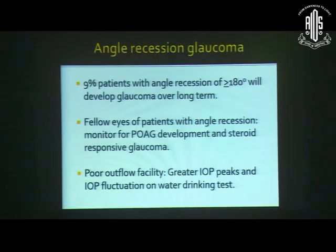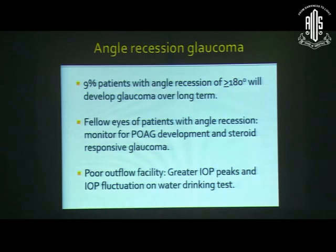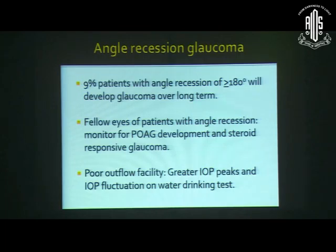9% of patients with angle recession of more than 180 degrees will eventually develop glaucoma over the long term. Fellow eyes of these patients should also be monitored for primary open-angle glaucoma and steroid-responsive glaucoma, because those who develop angle recession glaucoma have a high propensity to develop glaucoma in the fellow eye. These eyes also have poor outflow facility, indicated by greater IOP peaks and IOP fluctuations on water drinking tests.